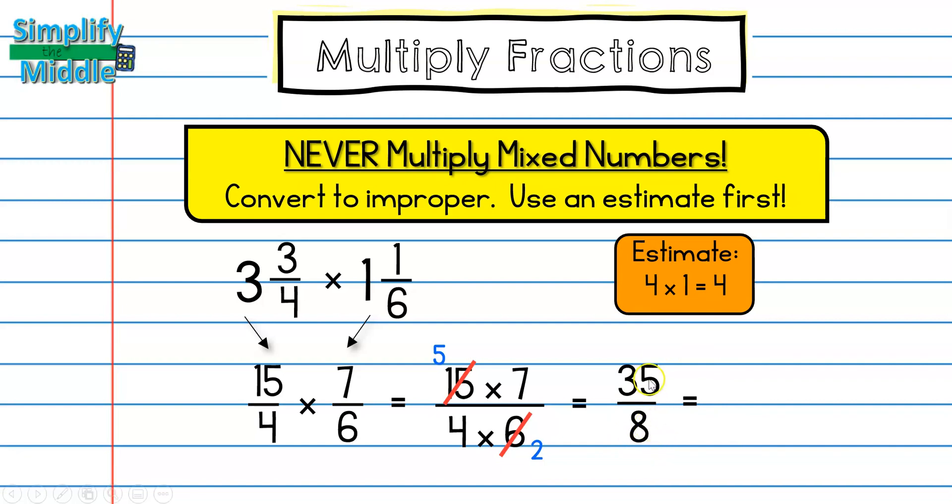So 35 divided by 8 can fit in 4 times. So I have 4 wholes. And that's 32. And 35 minus 32 is 3. So my answer is 4 and 3 eighths.